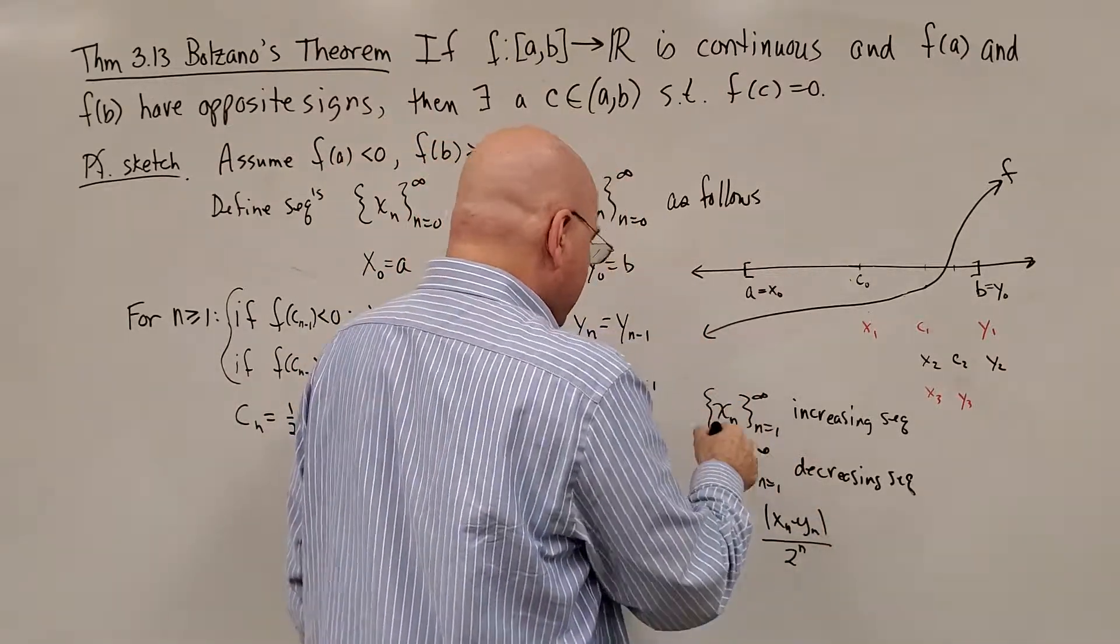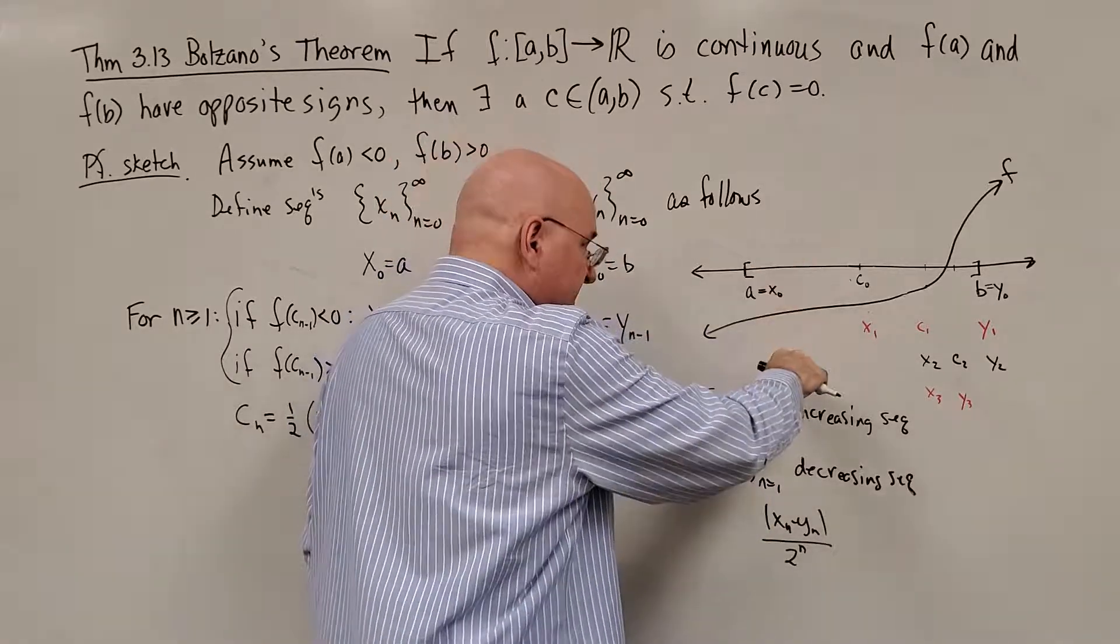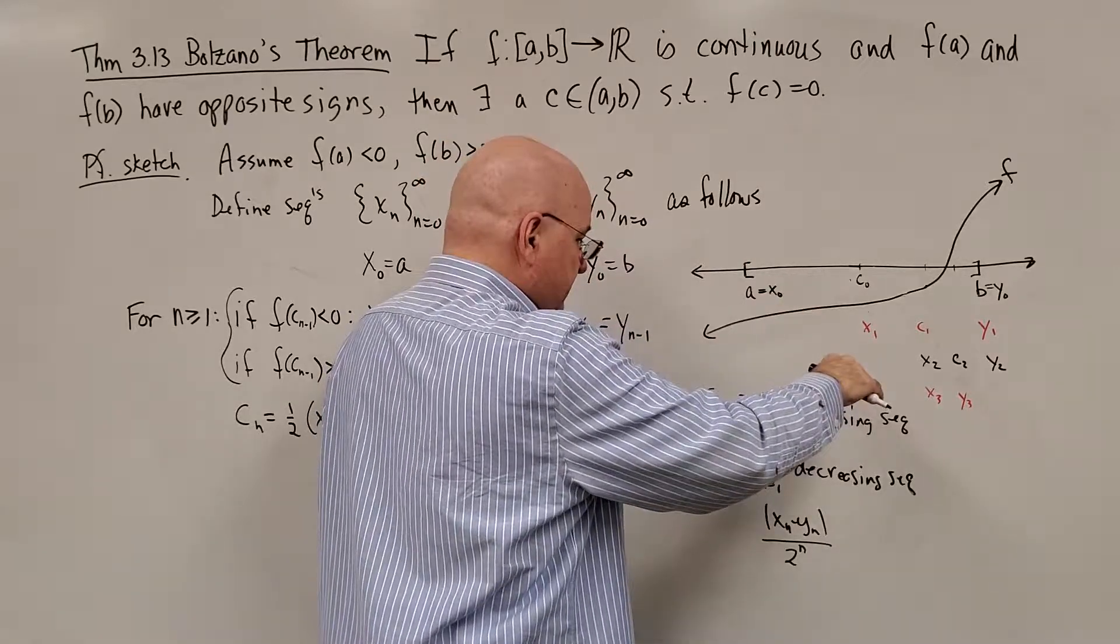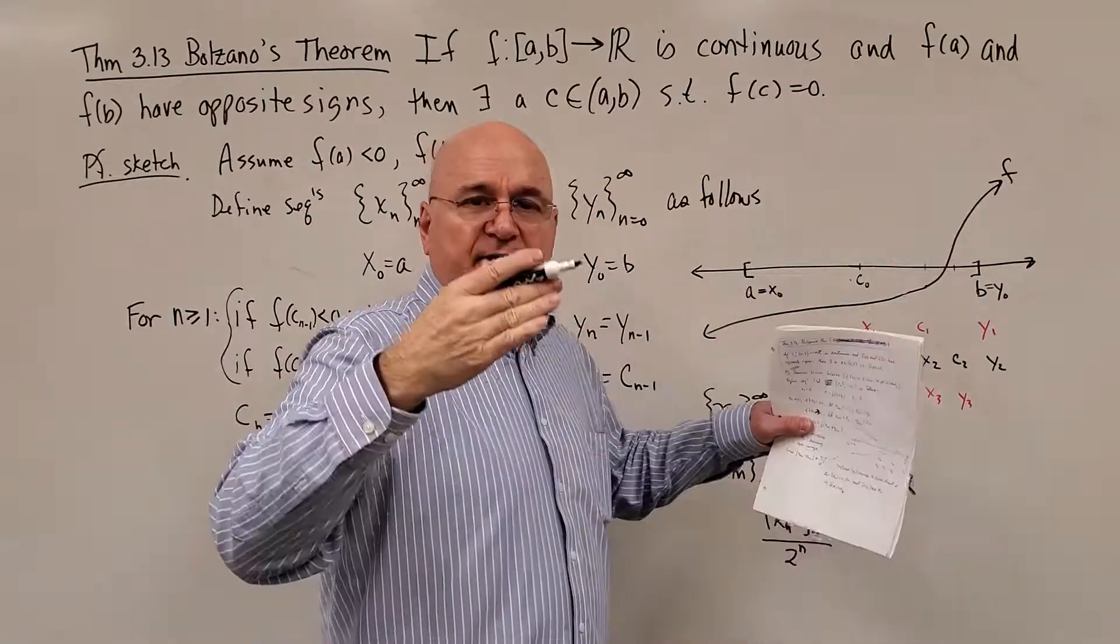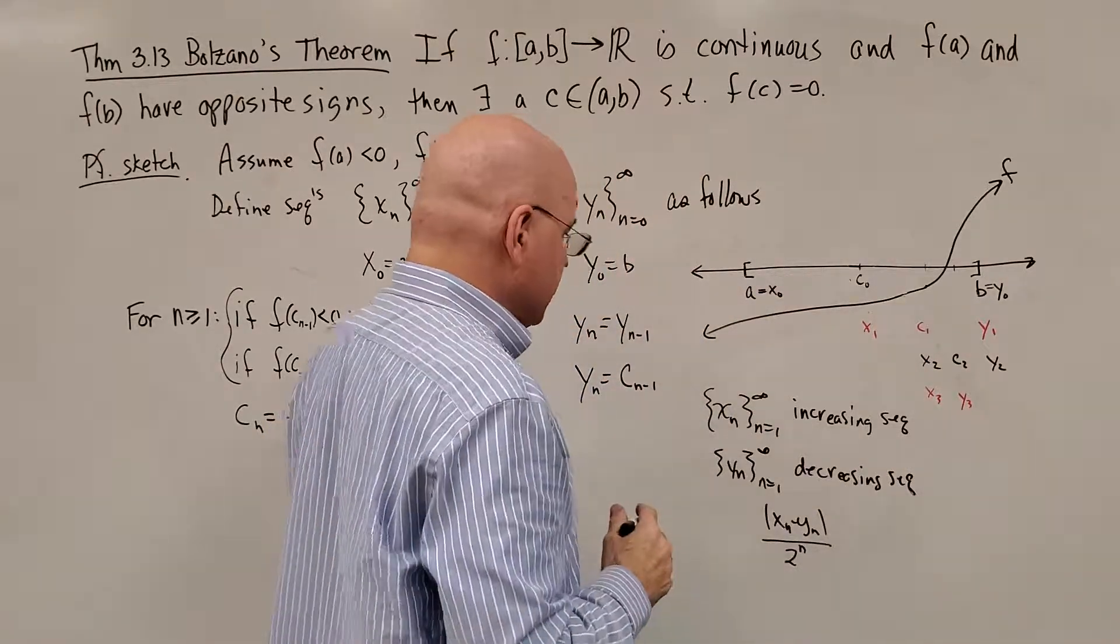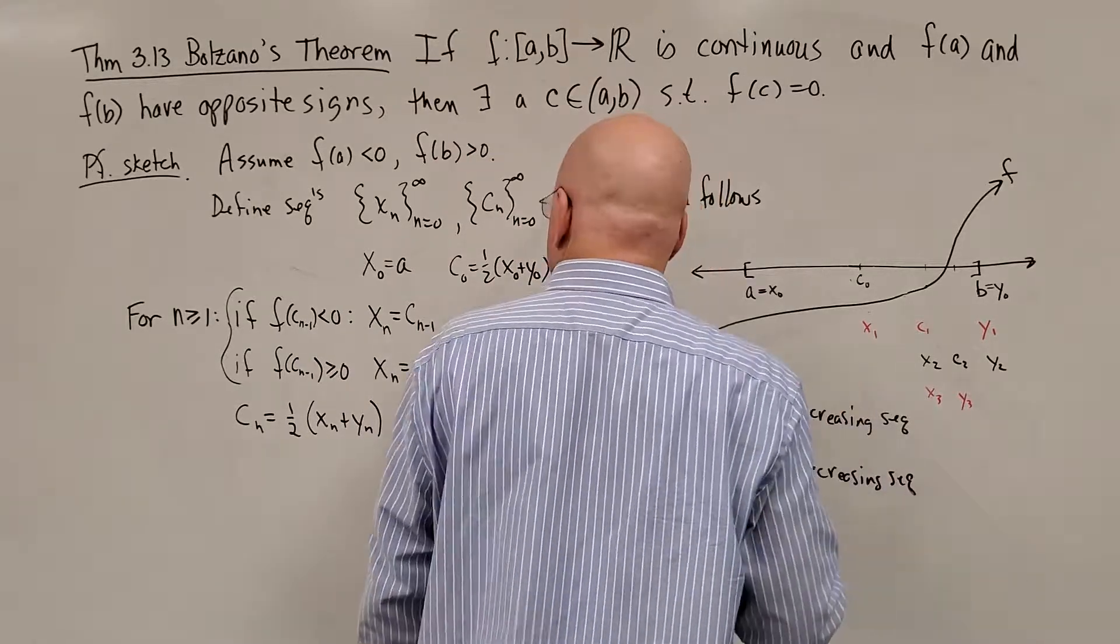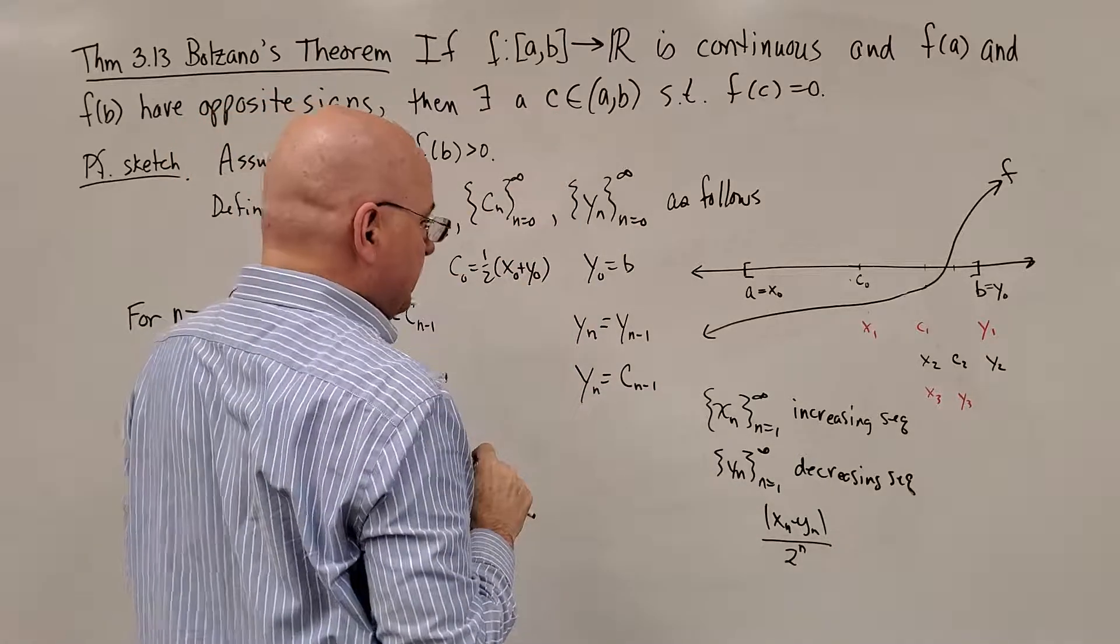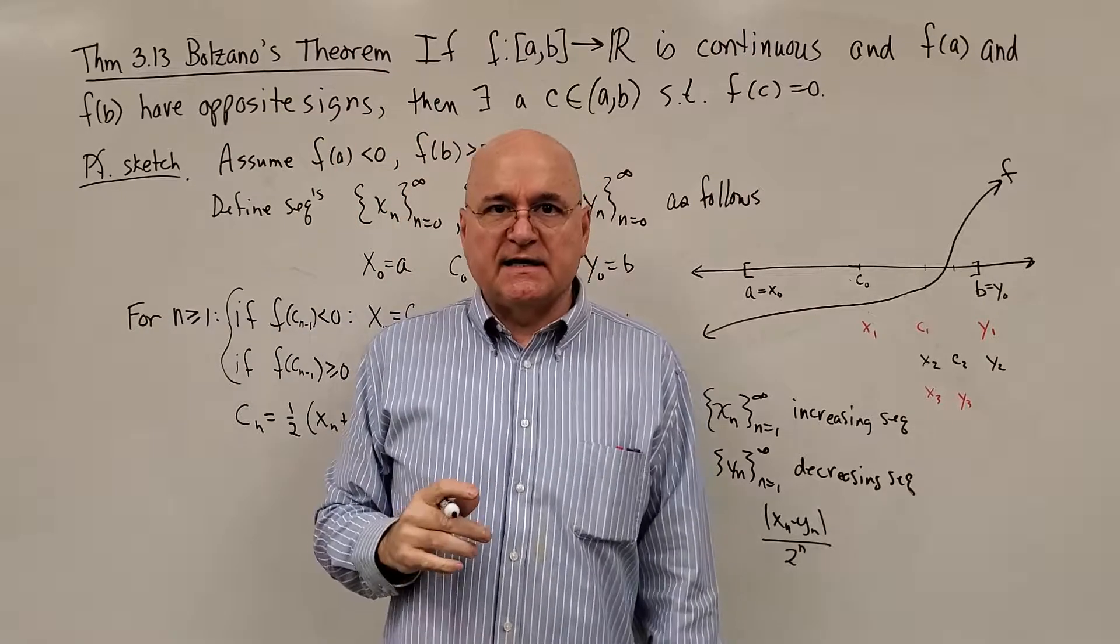And f(x_n), in this case, is always negative, less than or equal to 0. f(y_n) is always greater than or equal to 0. So they are honing in to the same number. And that number happens to be c. So f(c) would be 0. So again, I didn't rigorously prove it, just kind of sketched through it.